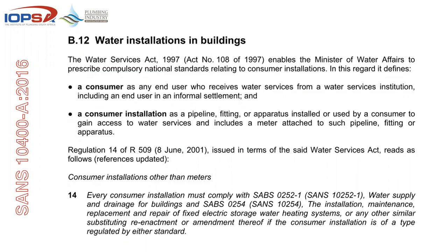A consumer installation is regarded as a pipeline, fitting, or apparatus installed or used by a consumer to gain access to water, and includes a meter attached to that pipeline, fitting or apparatus. Regulation 14 of the Water Services Act, quoted here, says every consumer installation must comply with SANS 10251, SANS 10252 Part 1, and SANS 10254 — the installation, maintenance and replacement of fixed heaters — and any amendment thereof. As far as water is concerned, our documents are indeed referenced by the Water Services Act and are found in the normative references of the actual document.